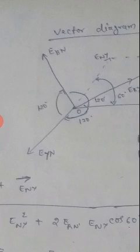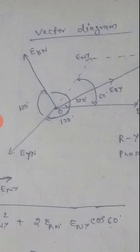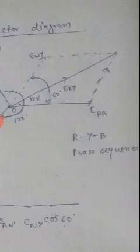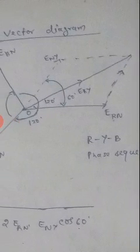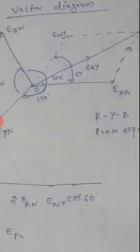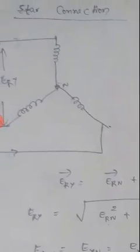Similarly, E_BN lags E_YN by another 120 degrees. Then we can tell E_BN lags E_RN by 240 degrees, or else you can tell E_BN leads E_RN by 120 degrees. So my phase sequence is R-Y-B, that is R, Y, and B in this direction.